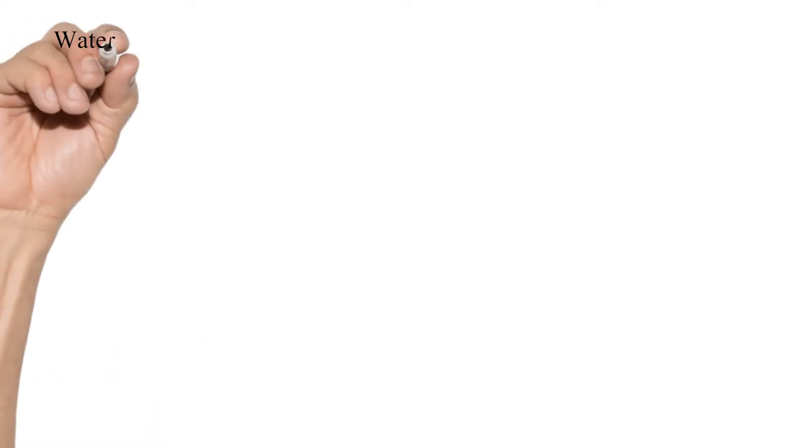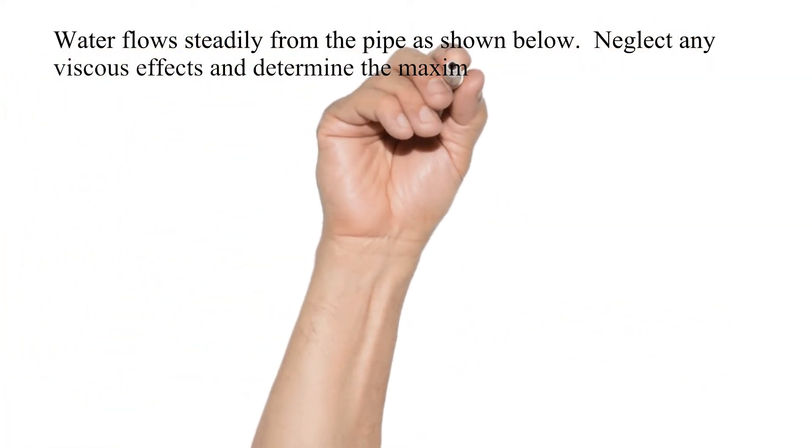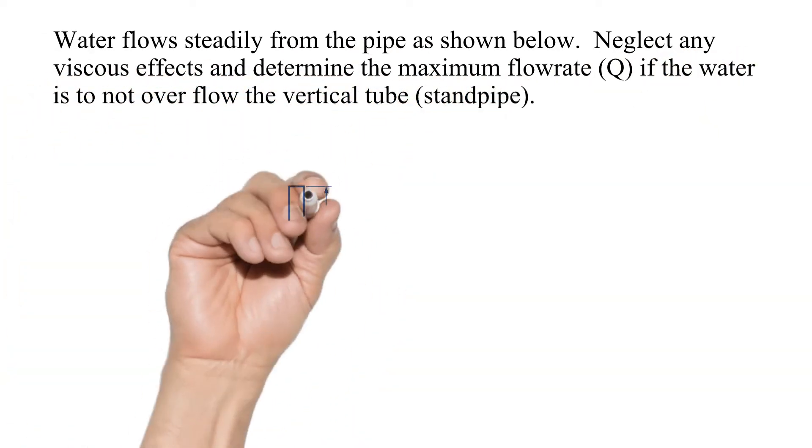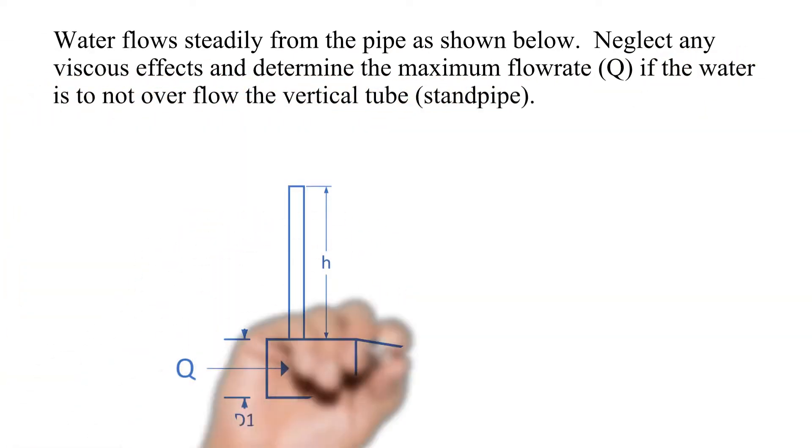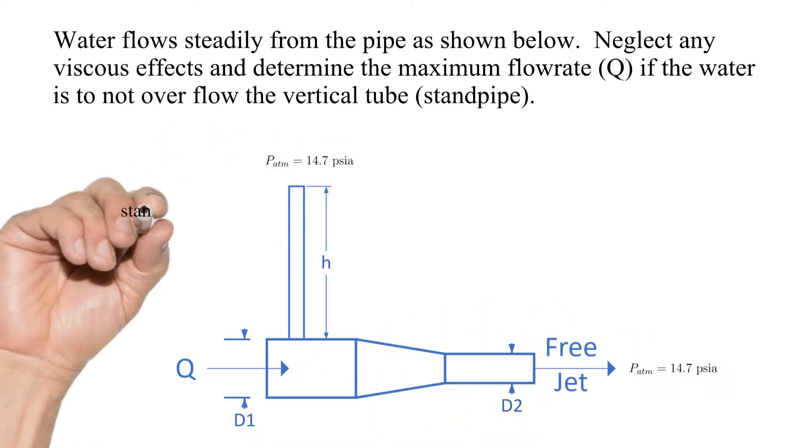Let's look at the problem. Water flows steadily from the pipe as shown below. Neglect any viscous effects and determine the maximum flow rate Q if the water is to not overflow the standpipe. Note that the pipe is discharging with a free jet to atmosphere. The standpipe is also open to atmosphere. The dimensions are noted in the drawing.